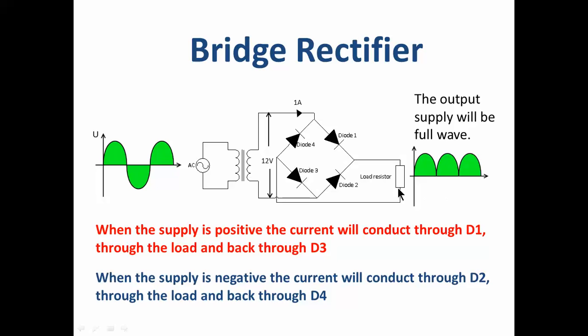All the bridge rectifiers are important, but the four-way bridge is the most widely used. So you need to be able to draw this diagram. You need to be able to get these diodes in the right direction, so that when it's positive, we get a forward bias through diode 1 and diode 3. And when it's negative, we get through diode 2, through the load the same way, and diode 4. So we get AC input and we get DC full wave output.